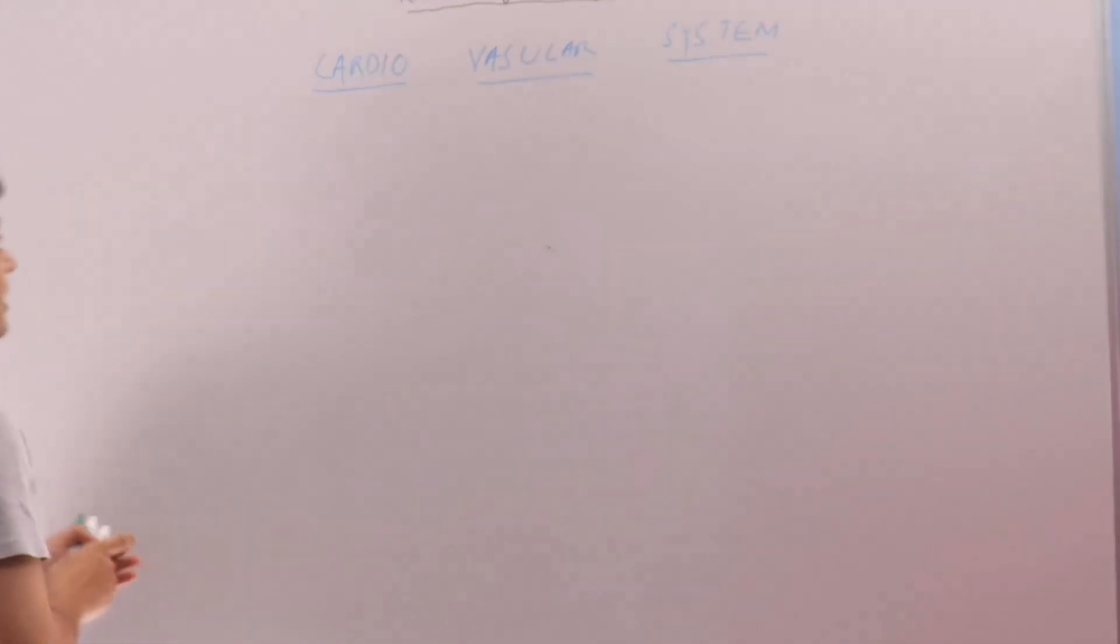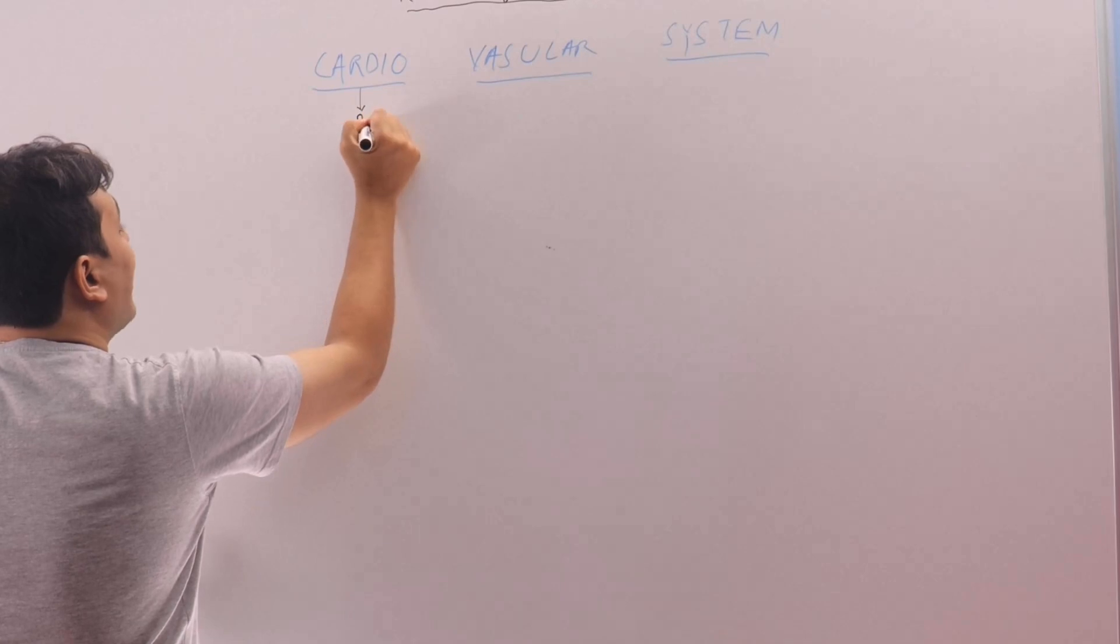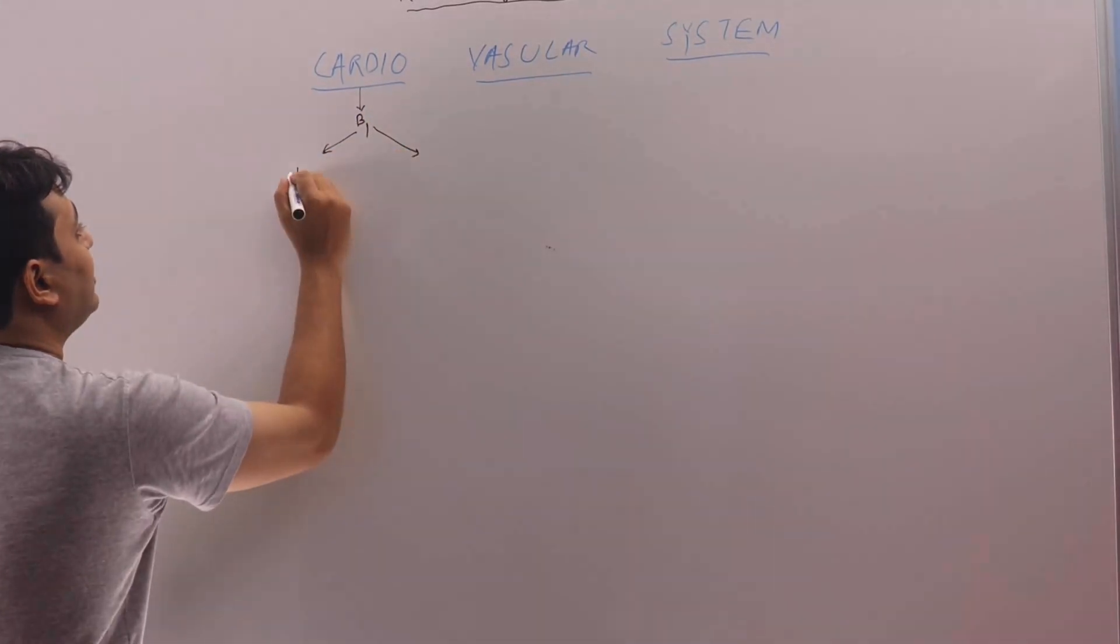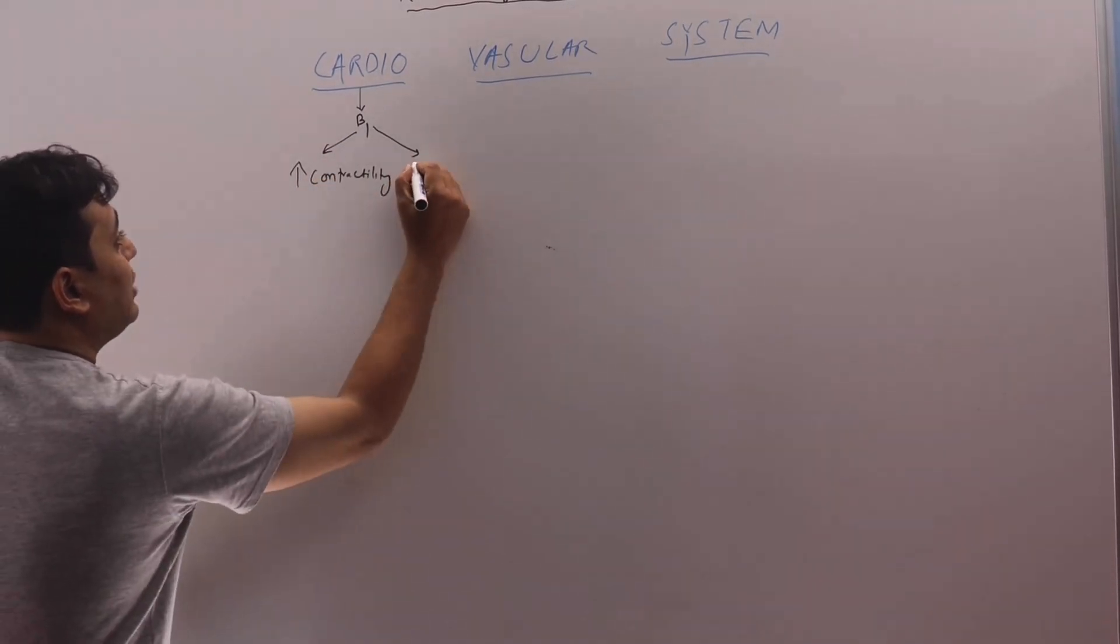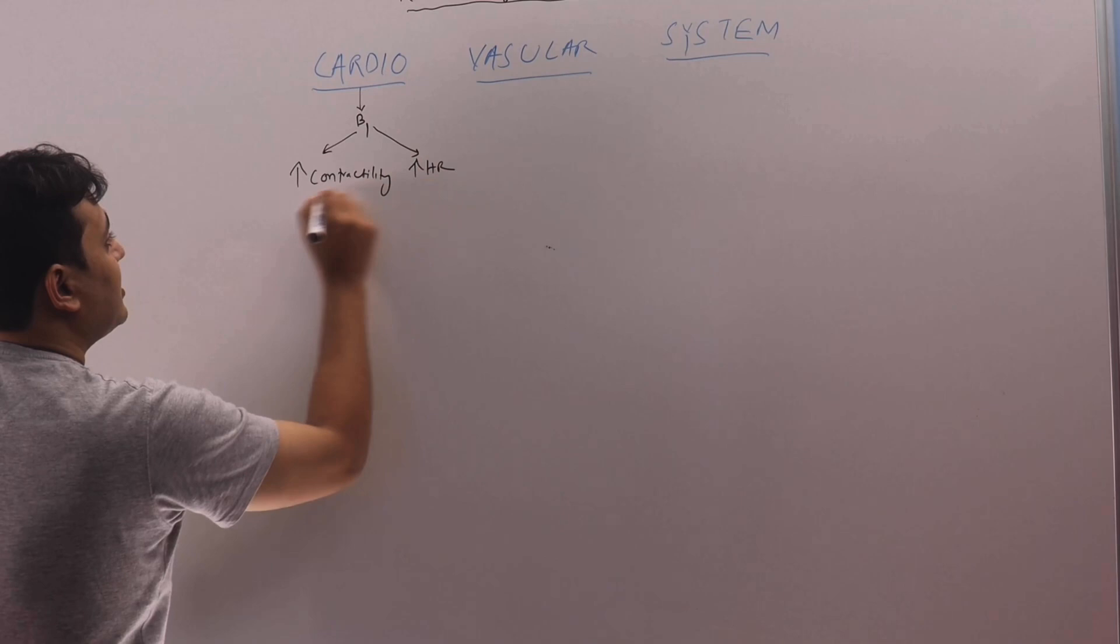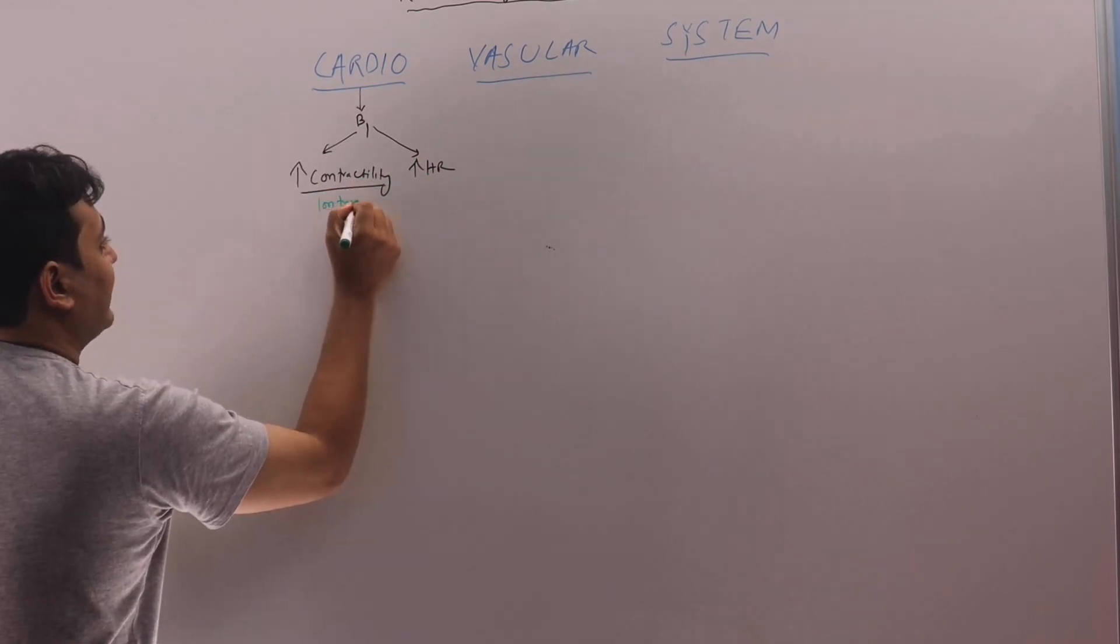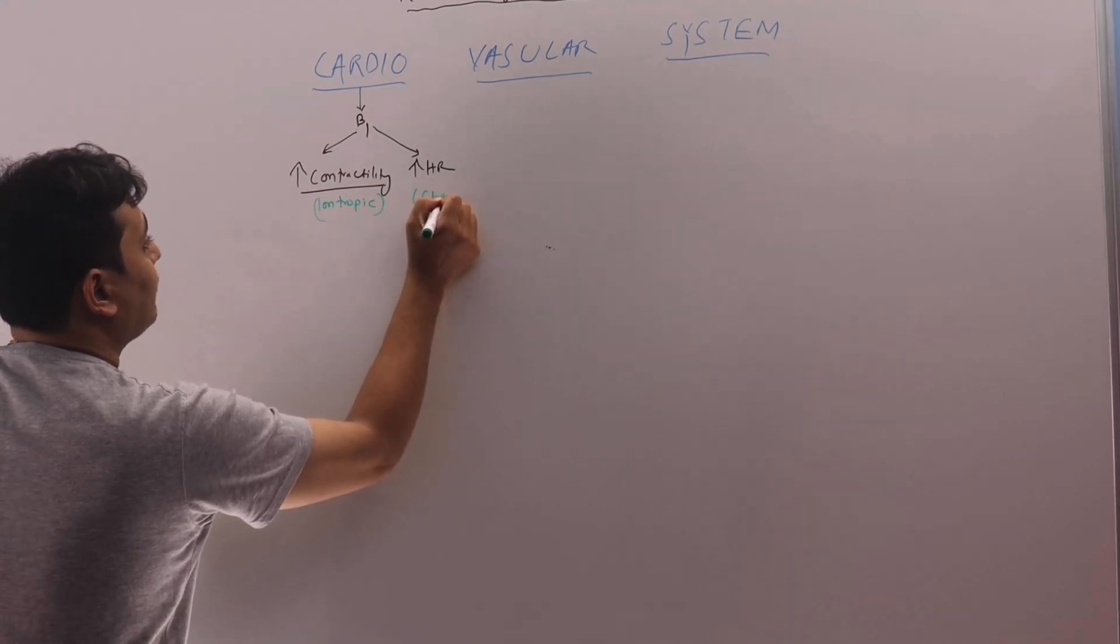For example, in the cardiovascular system, we have beta 1 receptor. So what that beta 1 receptor will do? It will increase the contractility and it will increase the heart rate. So this is called inotropic effect or inotropic and this is called chronotropic.